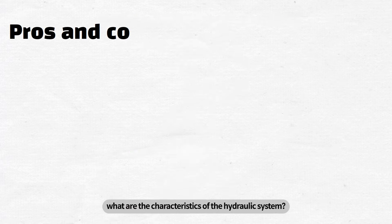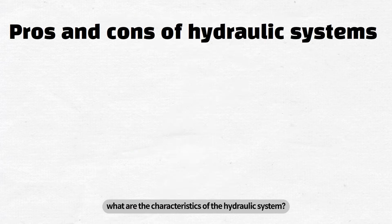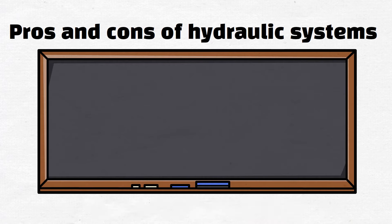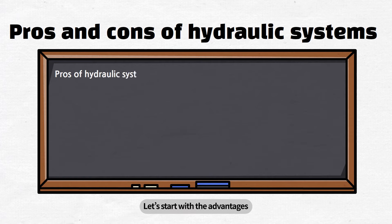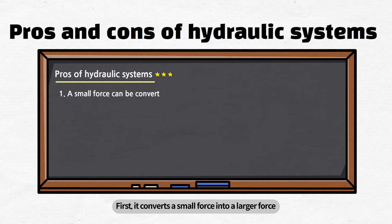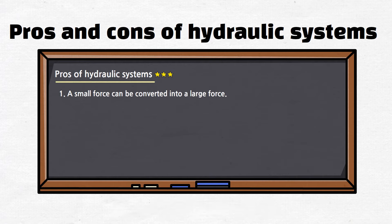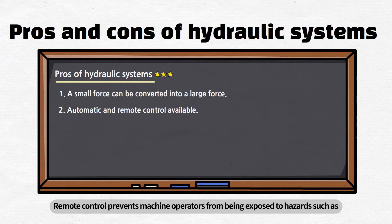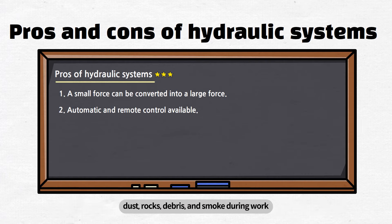What are the characteristics of the hydraulic system? Let me summarize the pros and cons. Starting with the advantages: First, it converts a small force into a larger force. Second, automatic and remote control is available. Remote control prevents machine operators from being exposed to hazards such as dust, rocks, debris, and smoke during work.